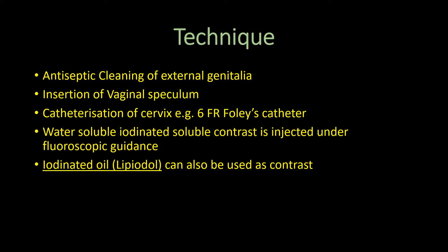The catheter should bridge to the internal os of the cervix, and the cannula is connected to a syringe through which 5 to 10 milliliters of an iodine-based water-soluble contrast is injected under fluoroscopic guidance, and then skiagrams are taken.